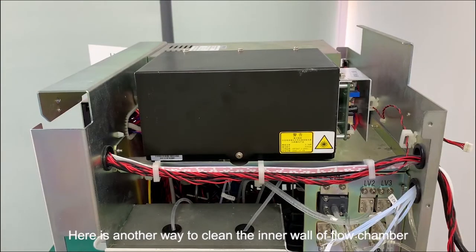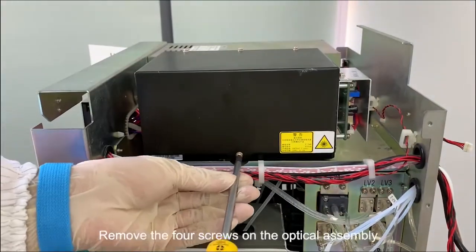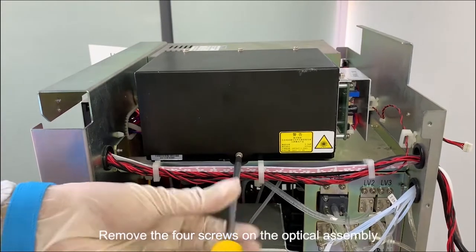Here is another way to clean the inner wall of flow chamber. Turn off the machine and put on anti-static wrist straps. Remove the four screws on the optical assembly.